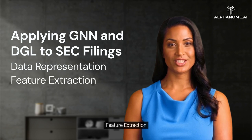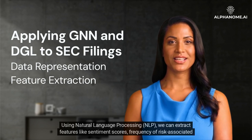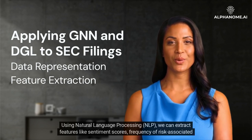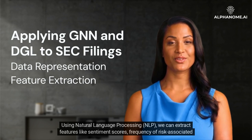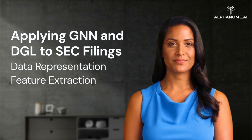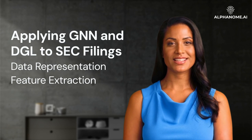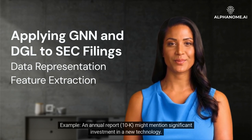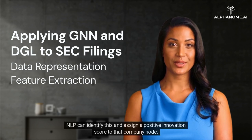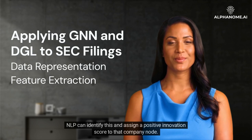Feature Extraction: SEC filings are rich in textual data. Using Natural Language Processing, NLP, we can extract features like sentiment scores, frequency of risk-associated terms, or mentions of strategic initiatives. These features can be attached to nodes in our graph. For example, an annual report, 10-K, might mention significant investment in a new technology. NLP can identify this and assign a positive innovation score to that company node.